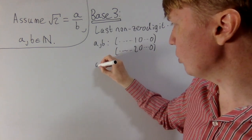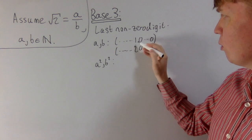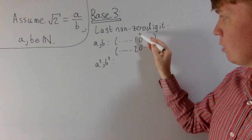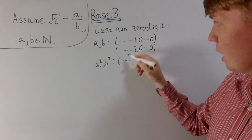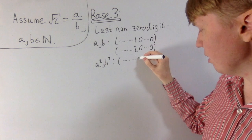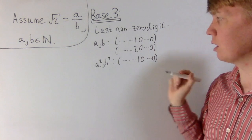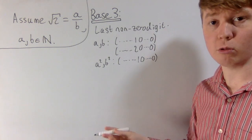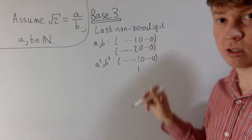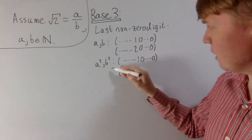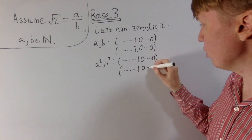That's not very profound. But when we square this — a squared or b squared — the last non-zero digit of a square number: if it was 1, then 1 squared gives us 1. And if our last non-zero digit was 2, then in base 3, 2 squared gives us 4, which still gives us a 1. So the last non-zero digit of a square number in base 3 has to always be 1.